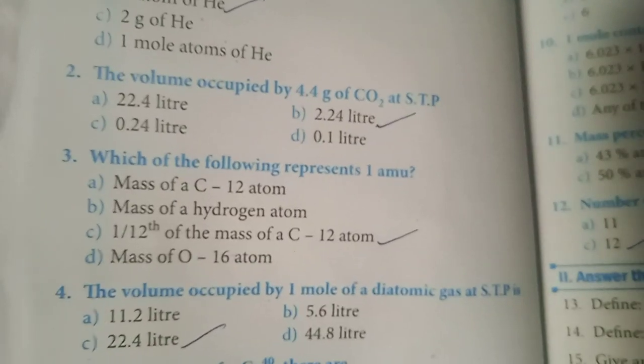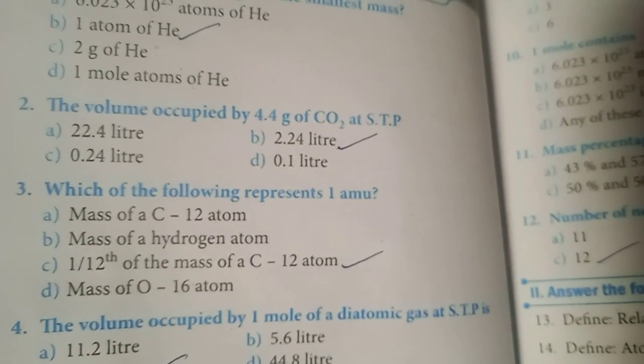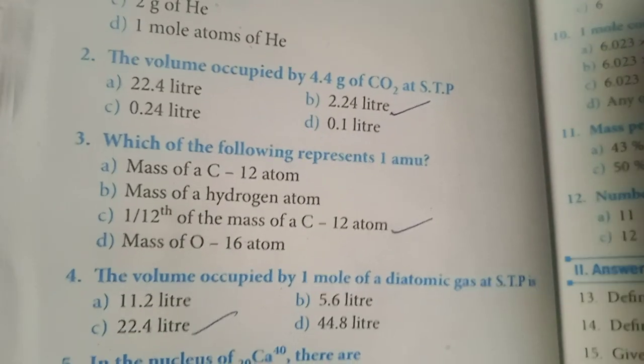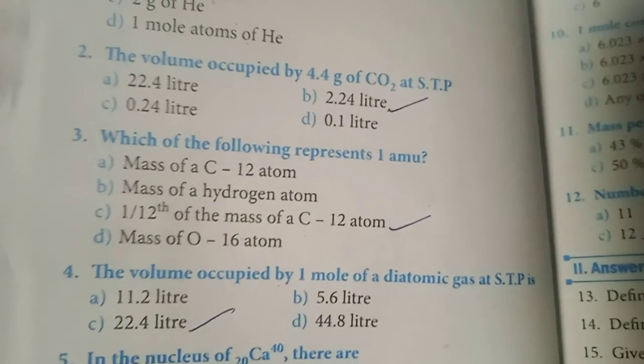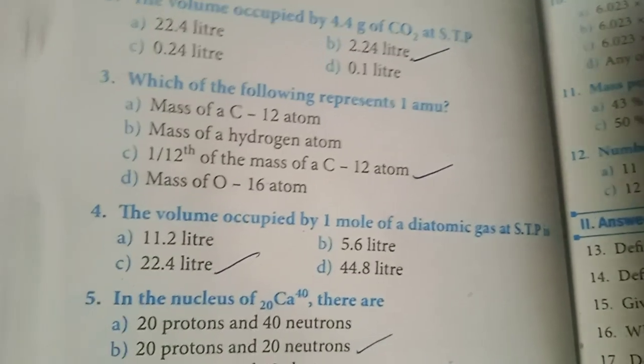Fourth one. The volume occupied by 1 mole of a diatomic gas at STP is? Option C, 22.4 liter, is the answer. Fifth one.